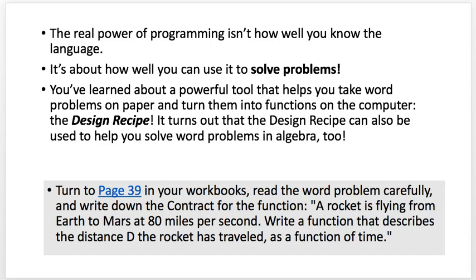Let's turn to page 39 in your workbook and read the word problem carefully. Go ahead and pause for a second and turn to page 39. I have the problem here also: a rocket is flying from Earth to Mars at 80 miles per second. Write a function that describes the distance d the rocket has traveled as a function of time.